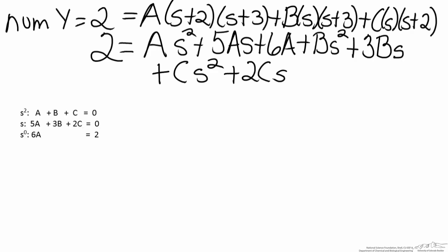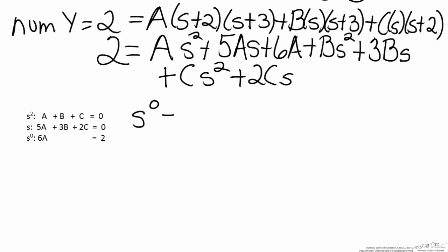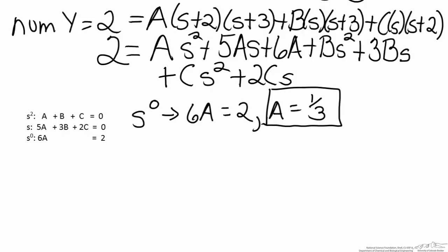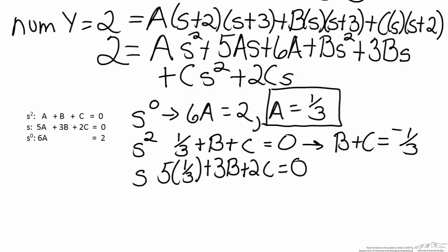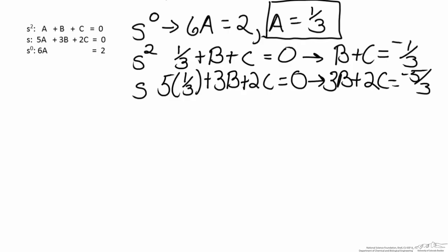By looking at the table we can use the s-to-the-zero terms to solve for a. We have 6a equals 2, which means a equals 1/3. We are then left with the s-squared and s equations to solve simultaneously. The s-squared equation gives: 1/3 plus b plus c equals 0, which can be rewritten as b plus c equals negative 1/3. For the s term: 5 times 1/3 plus 3b plus 2c equals 0, which rearranges to 3b plus 2c equals negative 5/3.